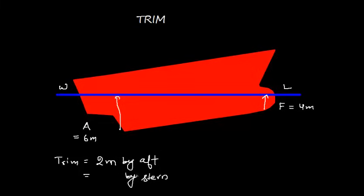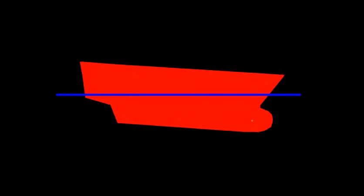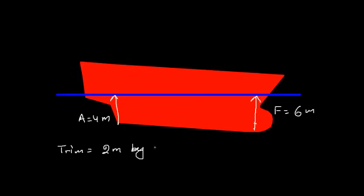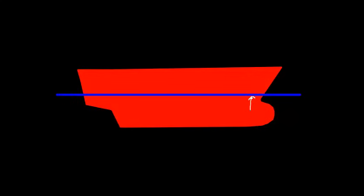Now let's see another scenario. Here the forward draft is 6 meters and aft draft is 4 meters. So the trim is going to be 6 minus 4, that is 2 meters by forward, or 2 meters by head.